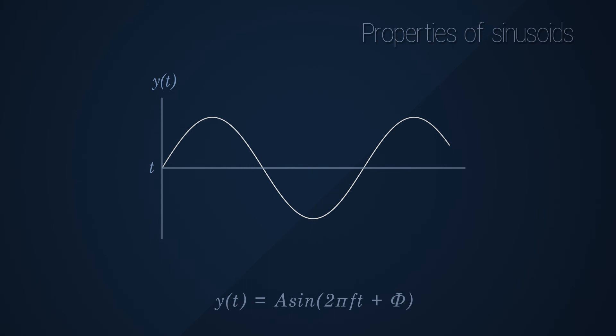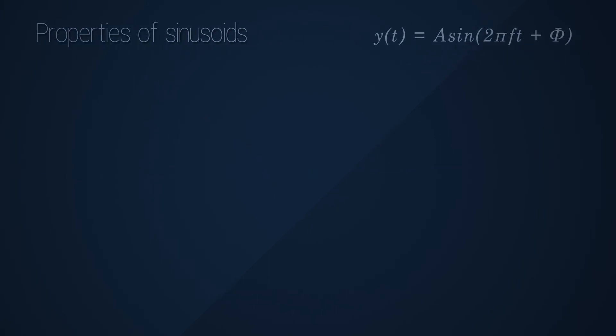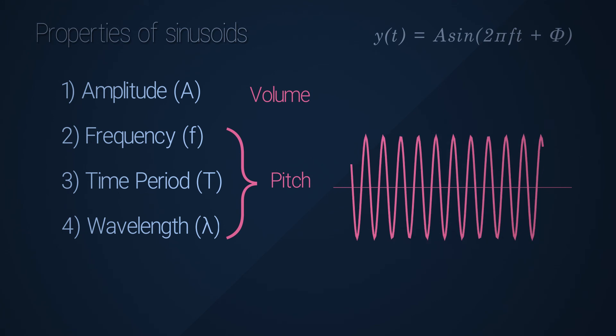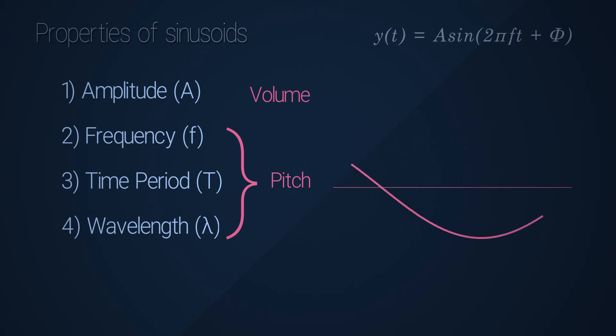So just to recap the properties of the sinusoid, we have the amplitude A, which controls the volume and the loudness of the signal. We have three properties, namely frequency, time period, and wavelength, which can be interchangeably used, which controls the pitch of the audio signal. We all use frequency, because it makes the most contextual sense.